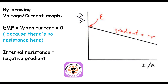In A-level practicals you'll often draw a graph of voltage on the y-axis against current on the x-axis. Another definition of EMF is the potential difference when current is zero, because there's no resistance drop. So the y-intercept of this graph gives you the EMF value. Using y = mx + c, you can also show that the gradient equals the negative internal resistance — giving you both values from a single graph.